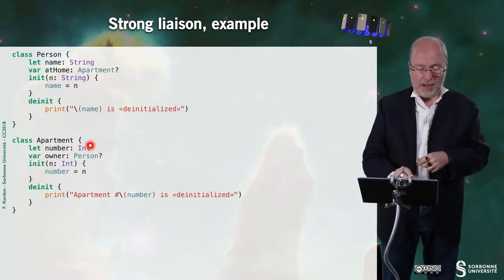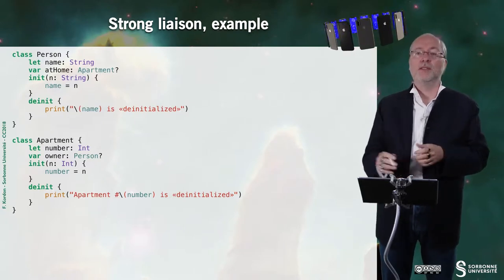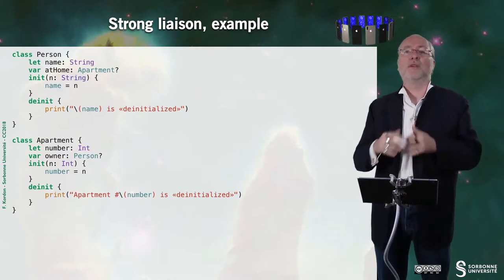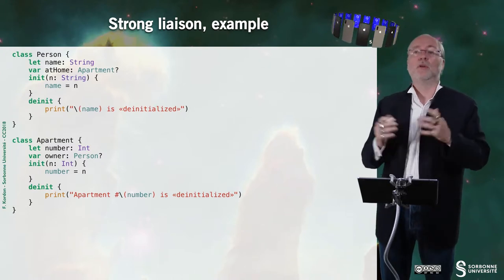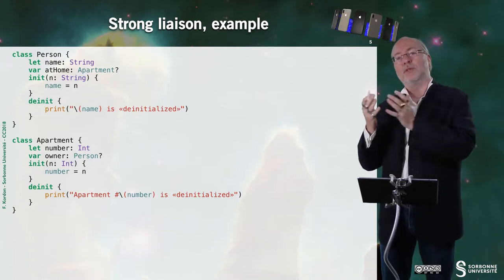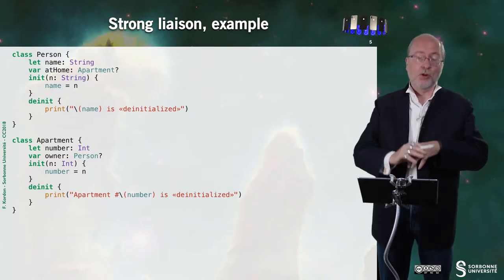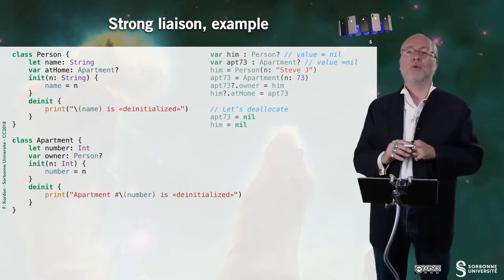Here I have another class, Apartment, that may refer to an owner who is obviously a Person. I also have a deinit here. An integer is not a class, so it's not a reference — it will disappear with the Apartment object when it's destroyed. But I want to track the fact that the deallocation, the destruction of the Apartment object, is done.